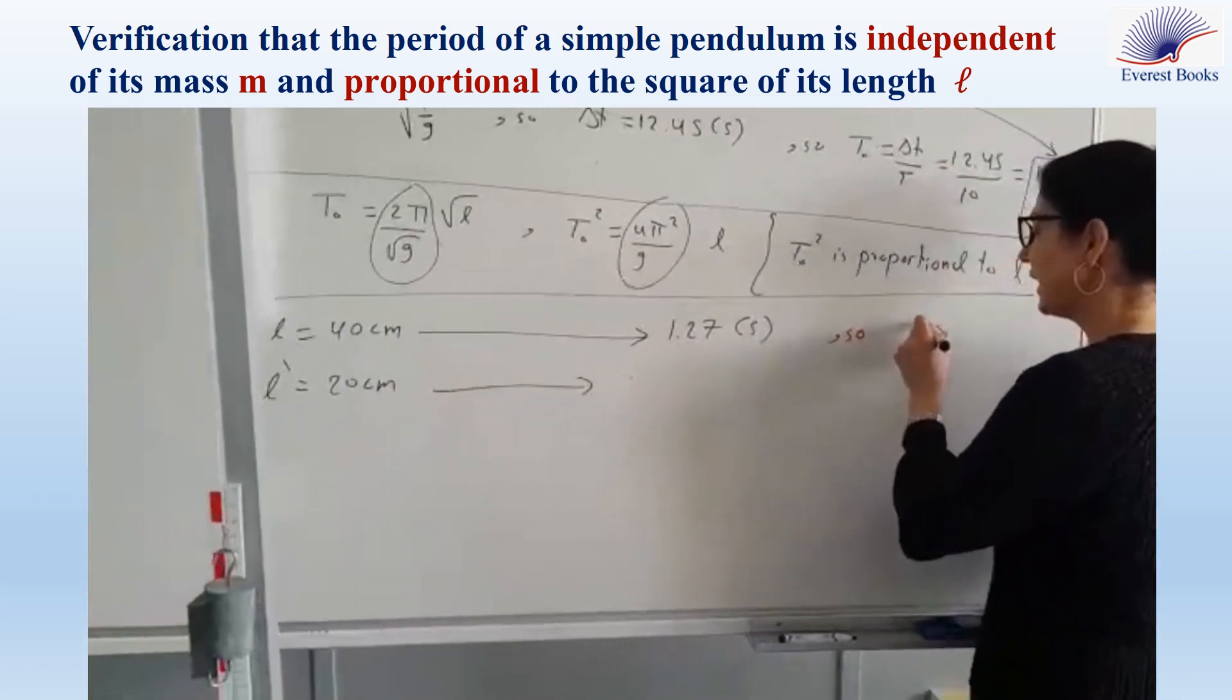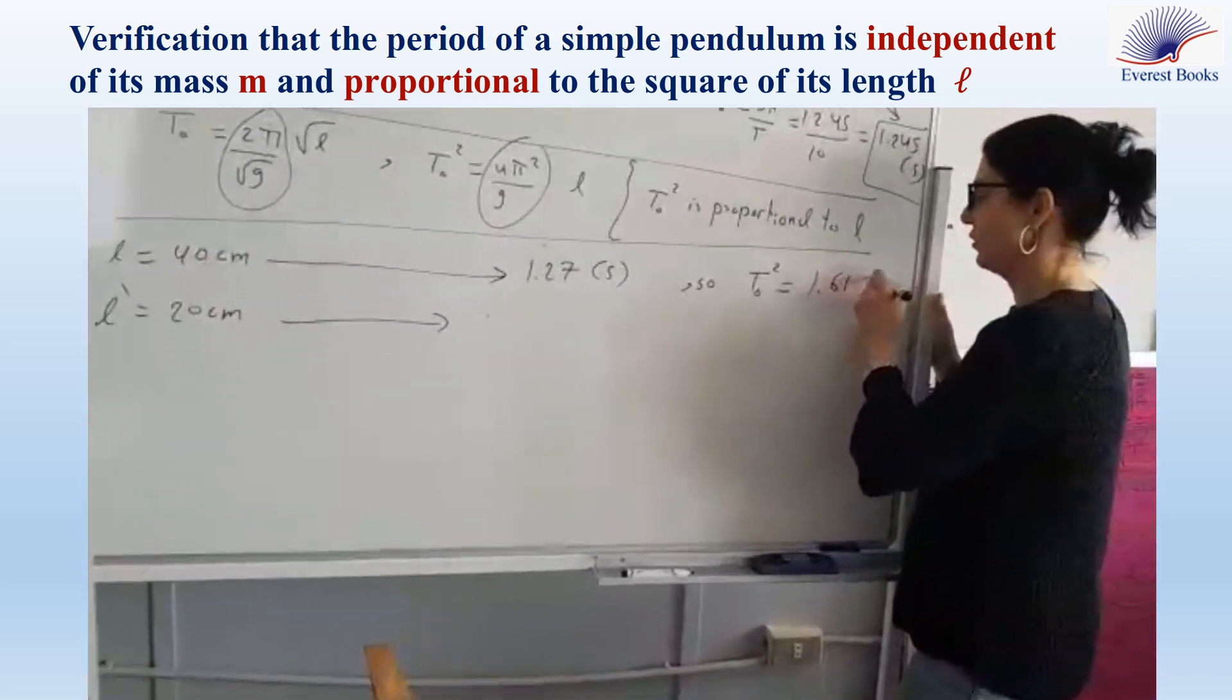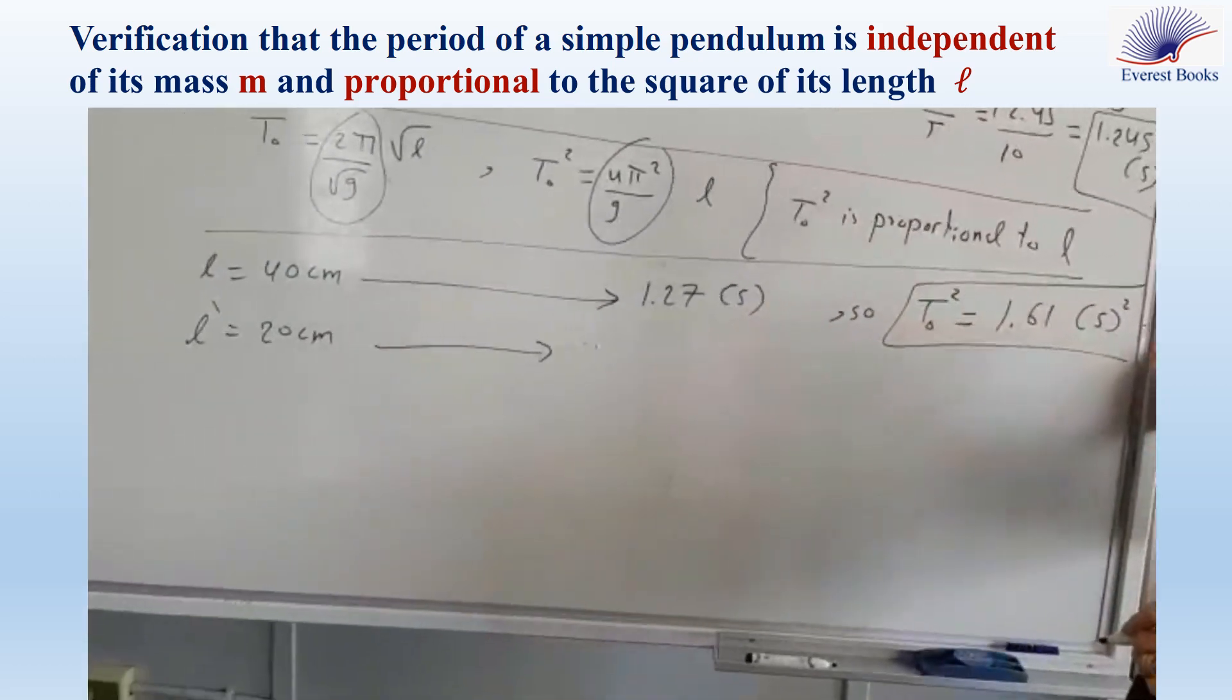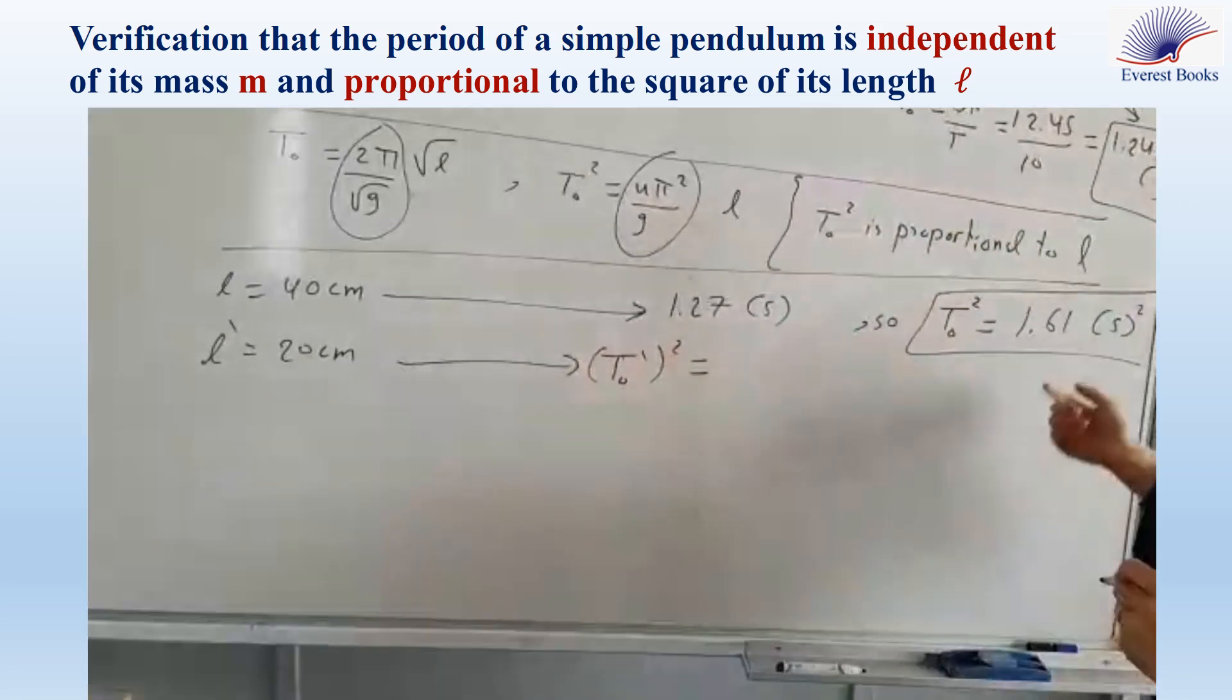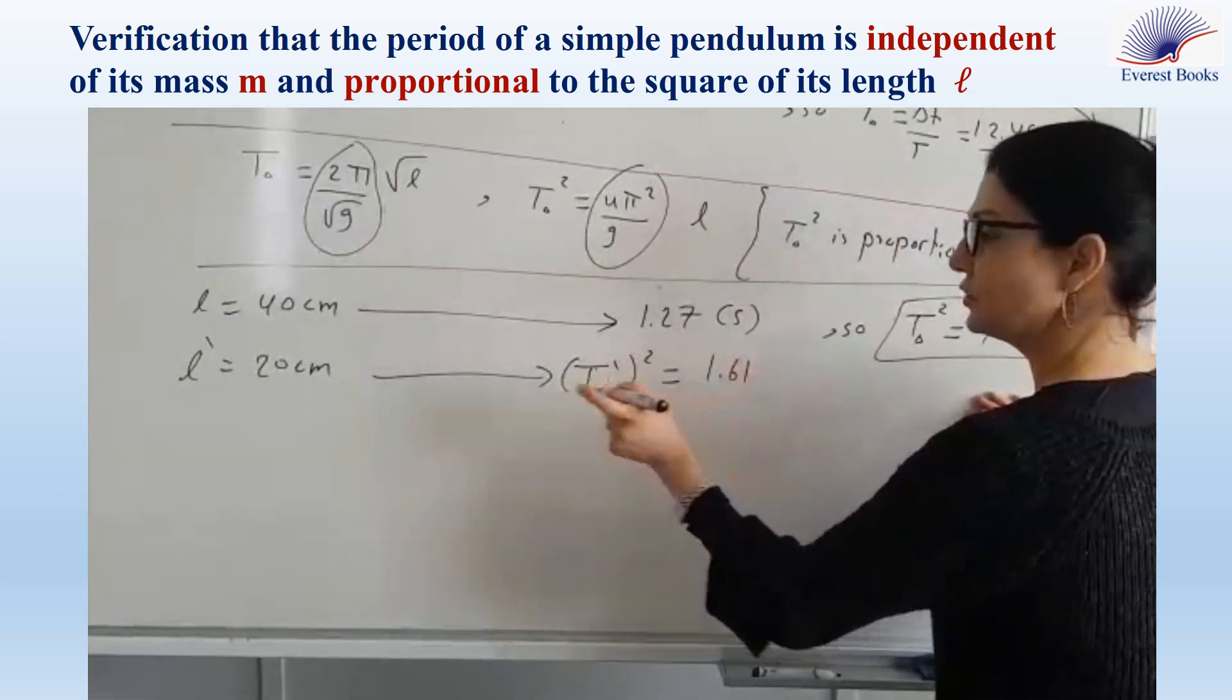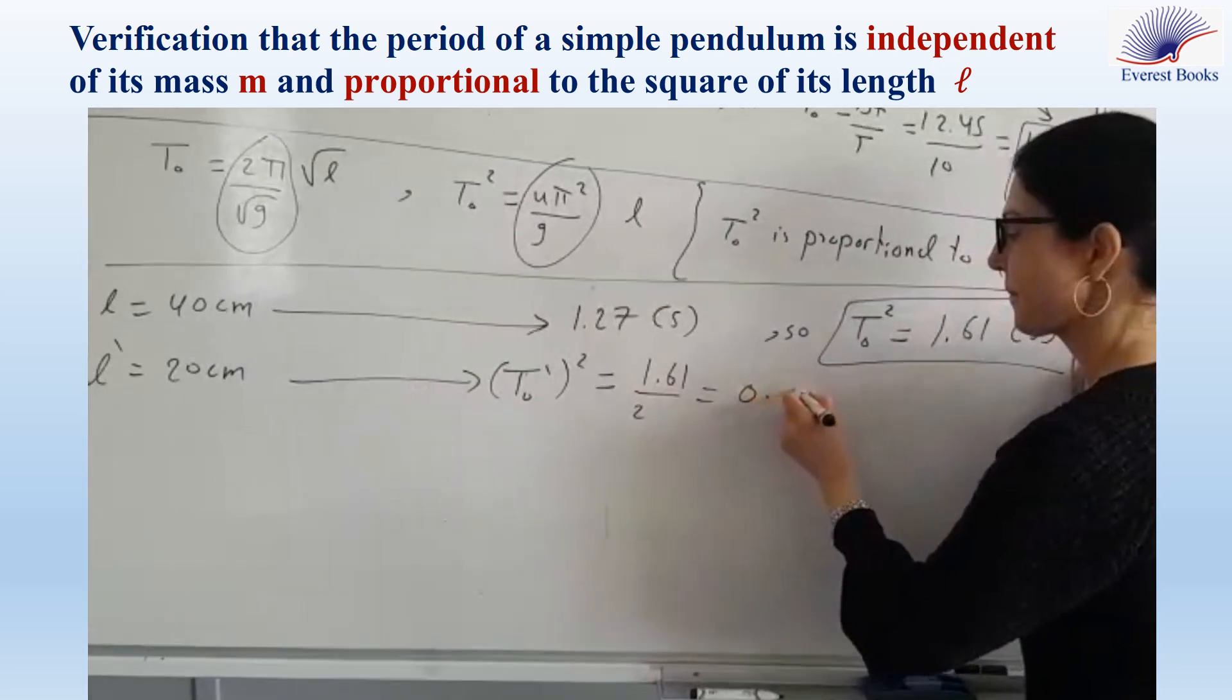Eileen, give me the square of the initial period. It's 1.61. Okay, so it is 1.61 seconds squared. Now, the square of the new period must be half the initial value. So, divide the answer by two, please. It's 0.805. Okay.